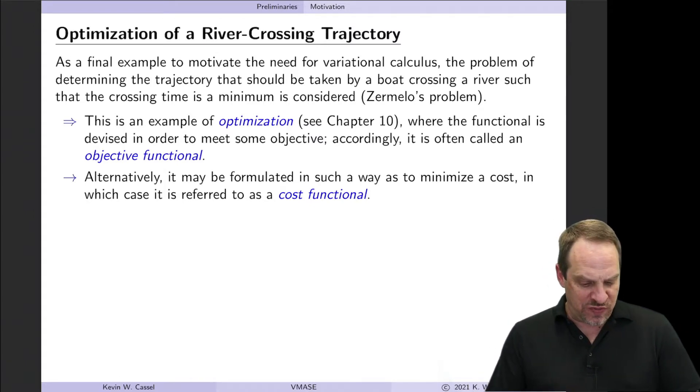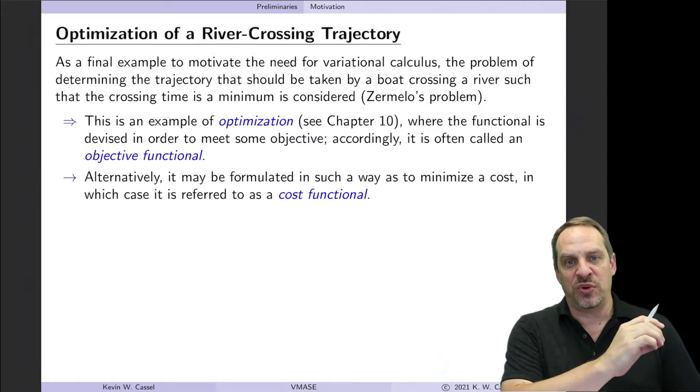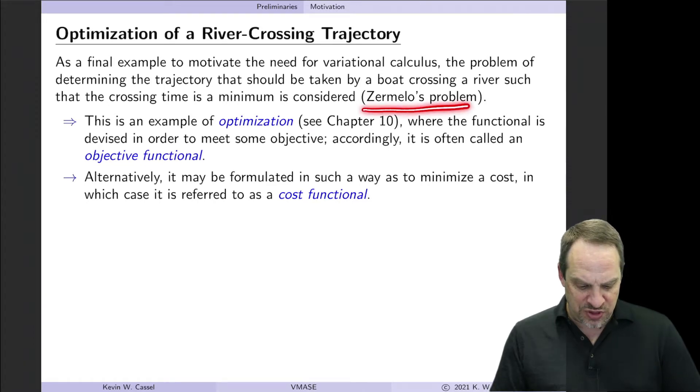So the idea is as follows. We have a river that we want to cross. So I have a left bank and a right bank of the river, and I want to go from a point on the left bank to a point on the right bank and get across the river in my boat in the minimum amount of time. This is known as Zermelo's problem.